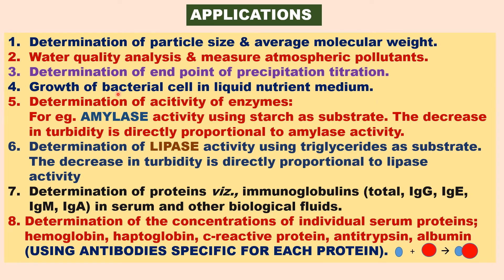We can also follow the growth of bacteria in a nutrient medium. When bacteria are added to a nutrient medium in a cell, there will be bacterial growth, and the solution will become turbid. The increase in turbidity indicates the growth of bacteria. Another important use is the determination of enzymatic activity — whether the enzyme is active or not. For example, when amylase enzyme is added to a starch solution, the starch solution is turbid. On adding amylase, it catalyzes starch into simple sugars, and the turbidity decreases, which is measured and is directly proportional to amylase activity.